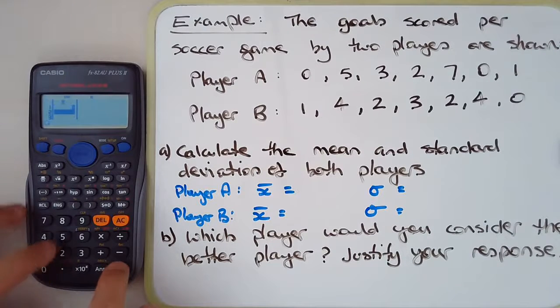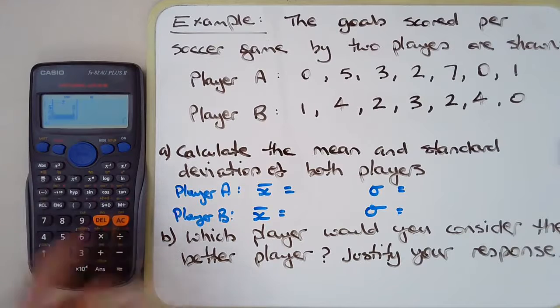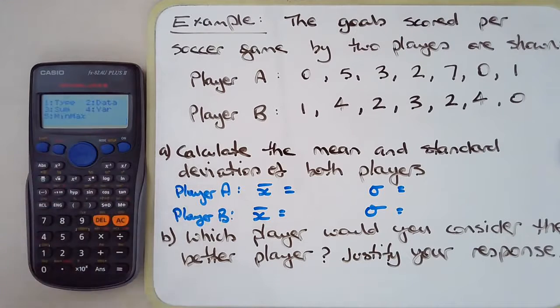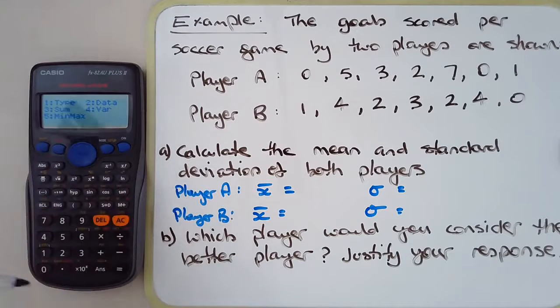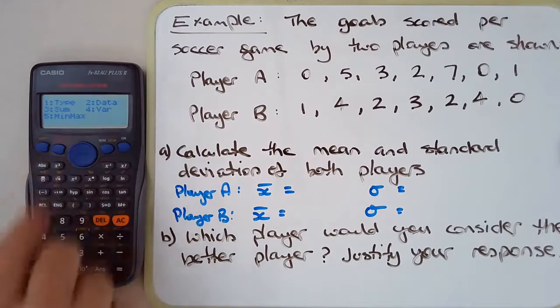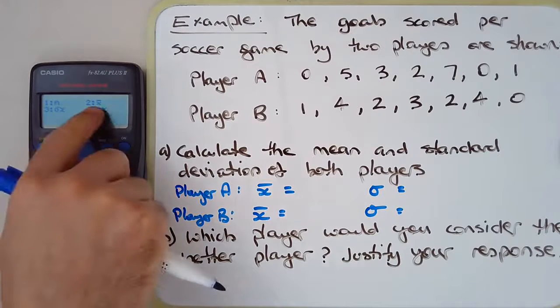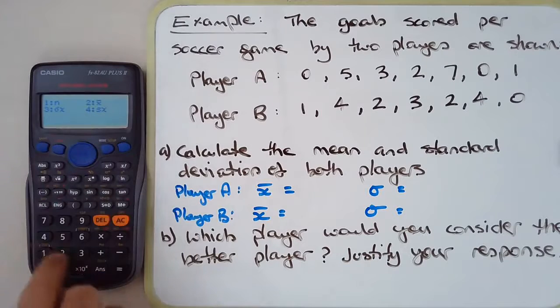0, 5, 3, 2, 7, 0, 1. AC, shift, one var—not min max. Min max is when we're doing box plots and working out quartiles and medians and all that, not interested in that. Number four, bar.